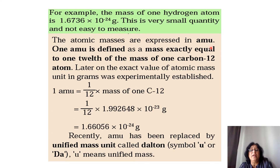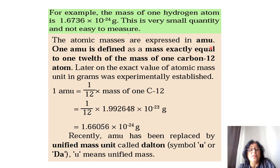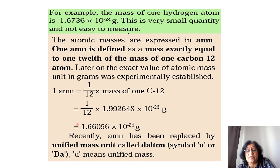When we say 1/12th of carbon-12, the mass of carbon-12 is taken as 12 AMU, so 1/12th comes out to be 1 AMU. The mass of one carbon-12 atom is 1.992648 × 10⁻²³ grams, and 1/12th of that is 1.66 × 10⁻²⁴ grams. AMU has been replaced by the unified mass unit called Dalton, with symbol U or Da, where U means unified mass.